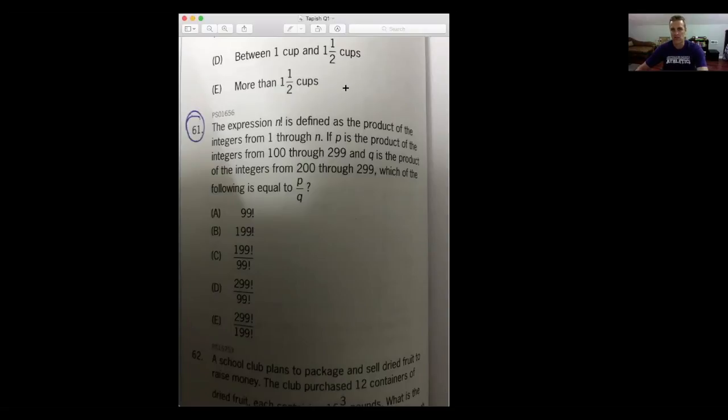All right, so that's just kind of background, and then the question itself is if p is the product of the integers from 100 through 299, so not quite 299 factorial, right, because that would include the numbers 1 all the way up until 99, so we've said we're starting at 100, and going to multiply that 101, 102, 103, all the way up until 299.